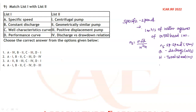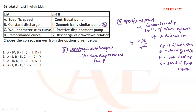Here Ns denotes the specific speed, and N denotes the speed of the pump in RPM. In list two they have given 'geometrically similar pump.' For constant discharge, we can use the positive displacement pump.